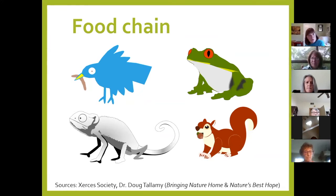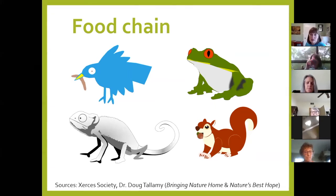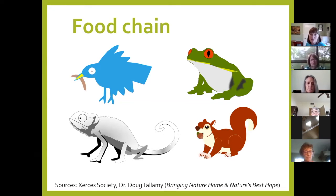Dr. Tallamy studied Carolina chickadees and discovered something shocking: a single mama chickadee, for a single clutch, needs not dozens, not hundreds, but thousands of insects. Thousands. If we don't have insects, the baby birds die and the food chain collapses.